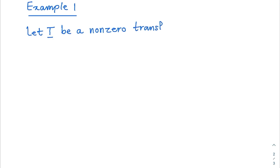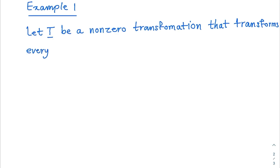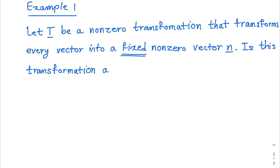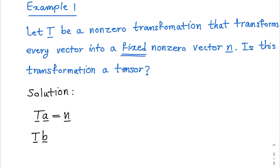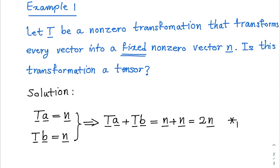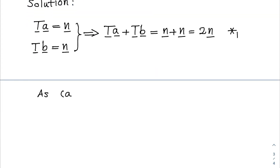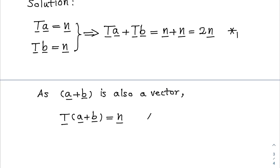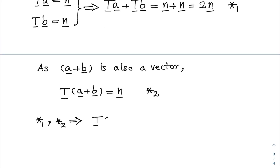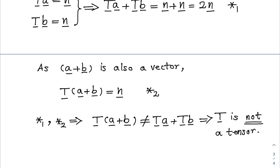Let T be a non-zero transformation that transforms every vector into a fixed non-zero vector N. Is this transformation a tensor? Transformation of vector A equals N, and transformation of vector B also equals N, so T of A plus T of B equals 2N. However, since A plus B is also a vector, the transformation of A plus B also equals N. These two results imply that additivity is not valid. Therefore, T is not a linear transformation or a tensor.